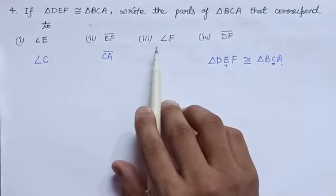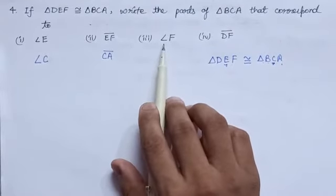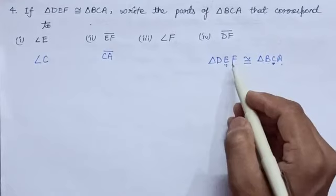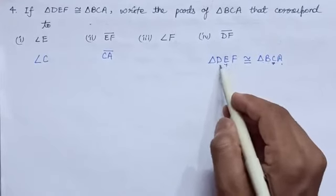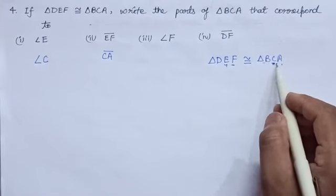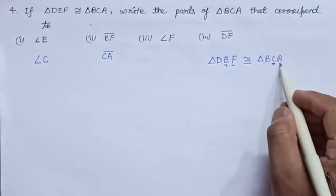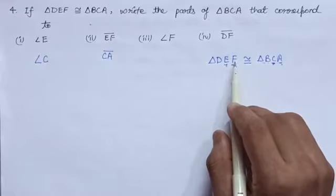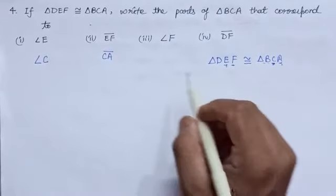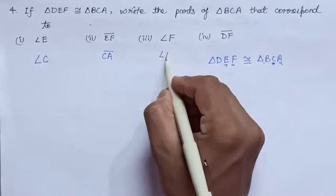In the same way, let us find the corresponding part for angle F. Angle F in triangle DEF comes last. In triangle BCA, the last term is angle A. Hence, angle F corresponds to angle A. Our answer is angle A.